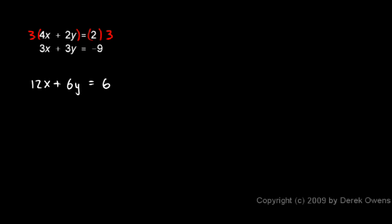Now the second equation I'm going to multiply by negative 2. I'll multiply by negative 2 on both sides. I'll use parentheses here to make it clear that I'm not saying minus 2. That's a multiplication right there. So now the second equation becomes negative 6x minus 6y equals 18.